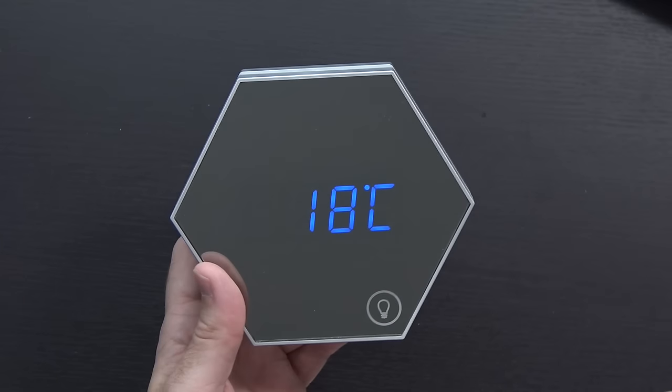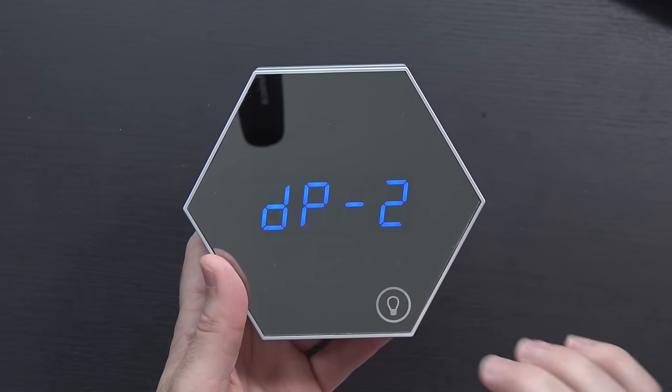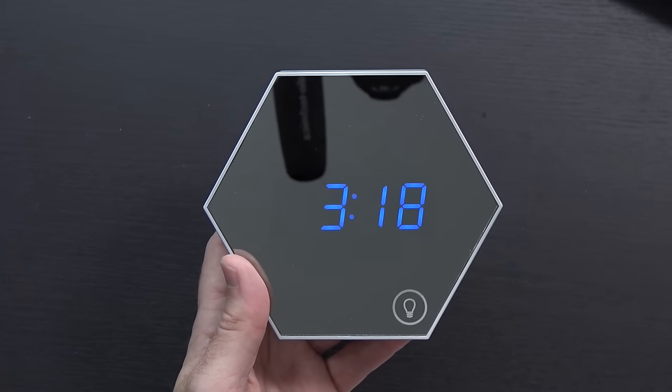Yeah, so it's not switching now. It looks like I just switched it over to Celsius there. So if I tap back to DP2, whenever it switches to the temperature, it's now going to be in Celsius.